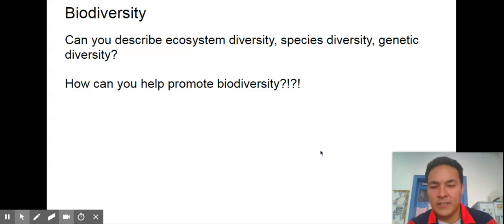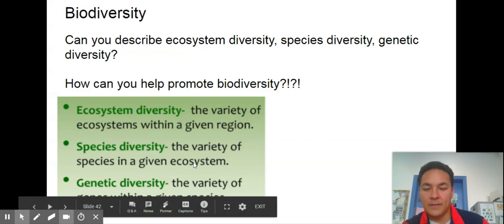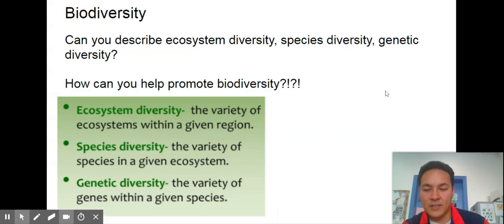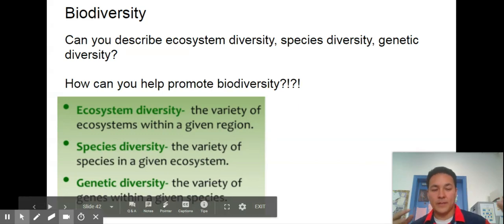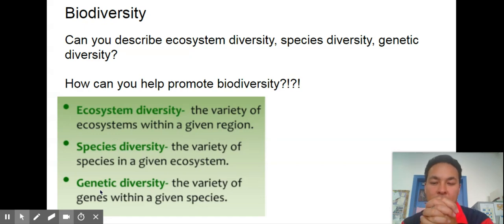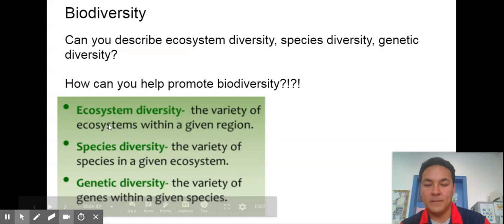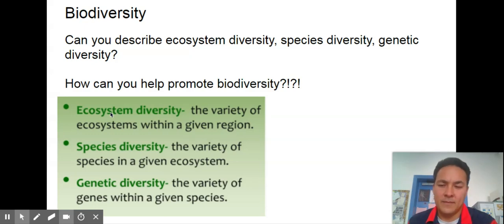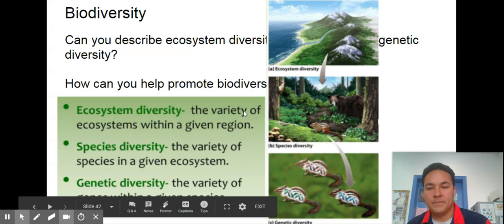Can you describe ecosystem diversity, species diversity, and genetic diversity, and how can you help promote them? It's just like the name sounds. Ecosystem is the variety of ecosystems within a given region. Species would be the number of different species in a given ecosystem. Genetic diversity would be the variety of genes within a given species. We would want to see lots of different lions in a savanna or lots of different turtles, because otherwise they might experience a genetic bottleneck where they're all too closely related and it would result in inbreeding. Species diversity, a good example would be the starfish experiment with Robert Payne. Ecosystem diversity is how many different ecosystems are within a biome or within a country.